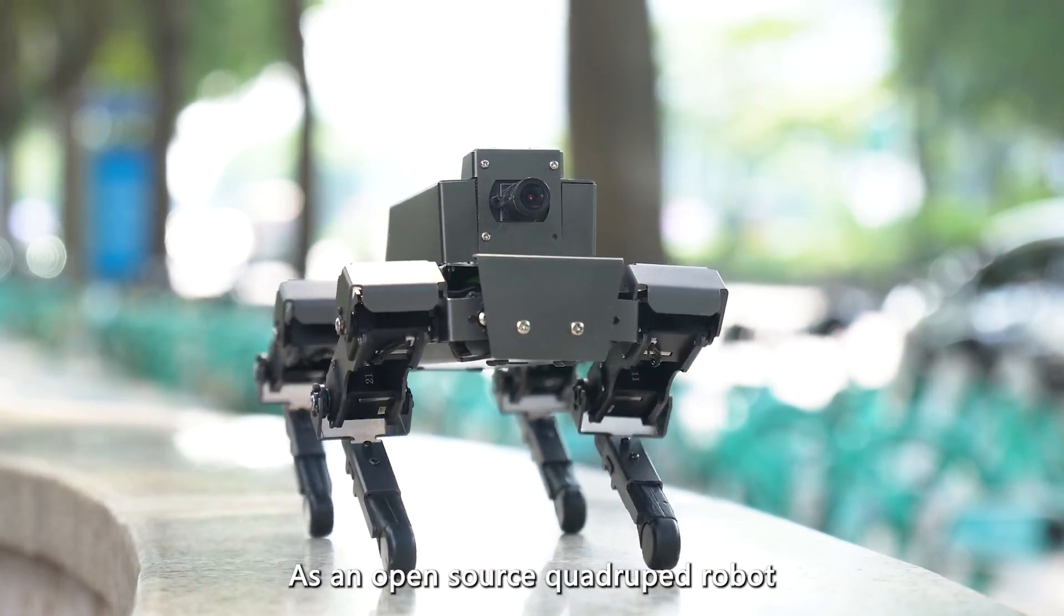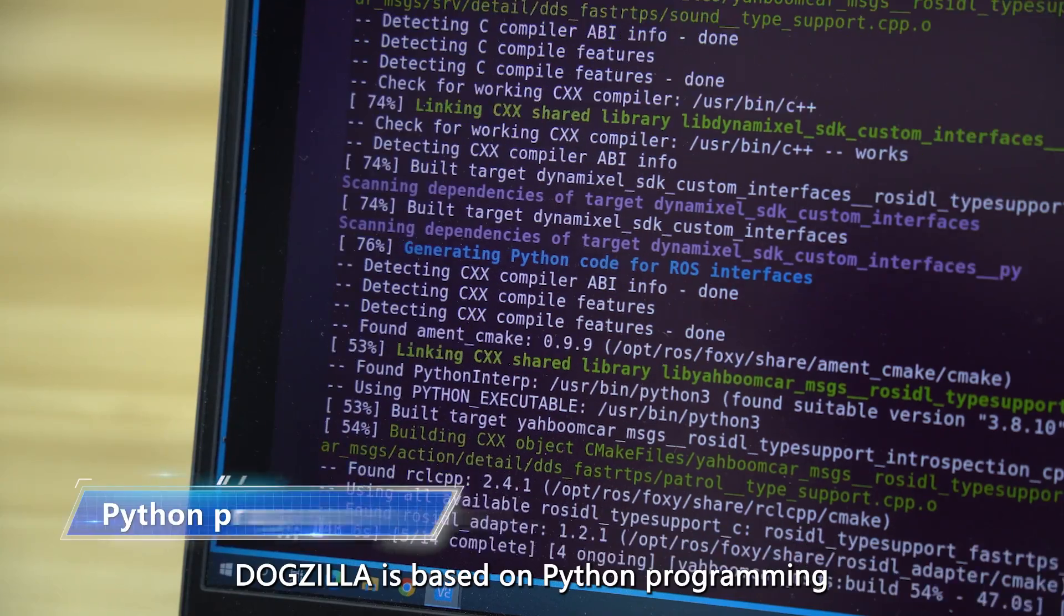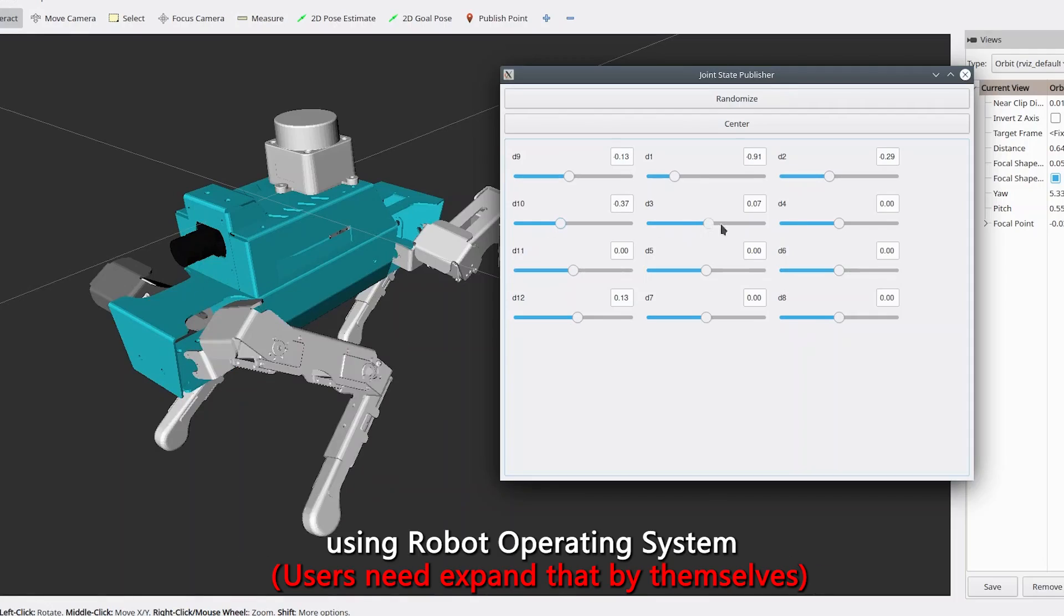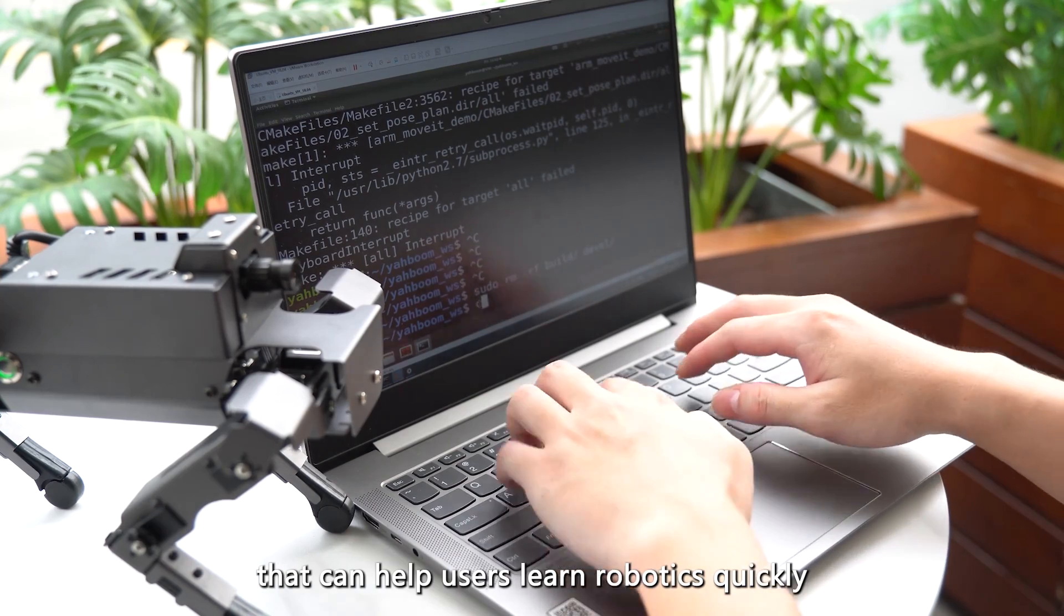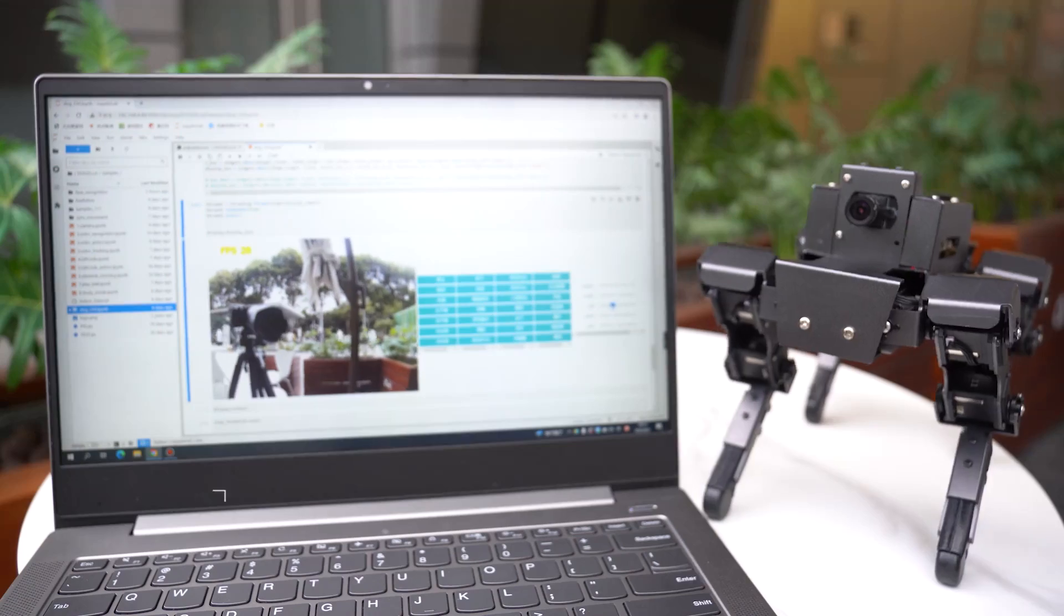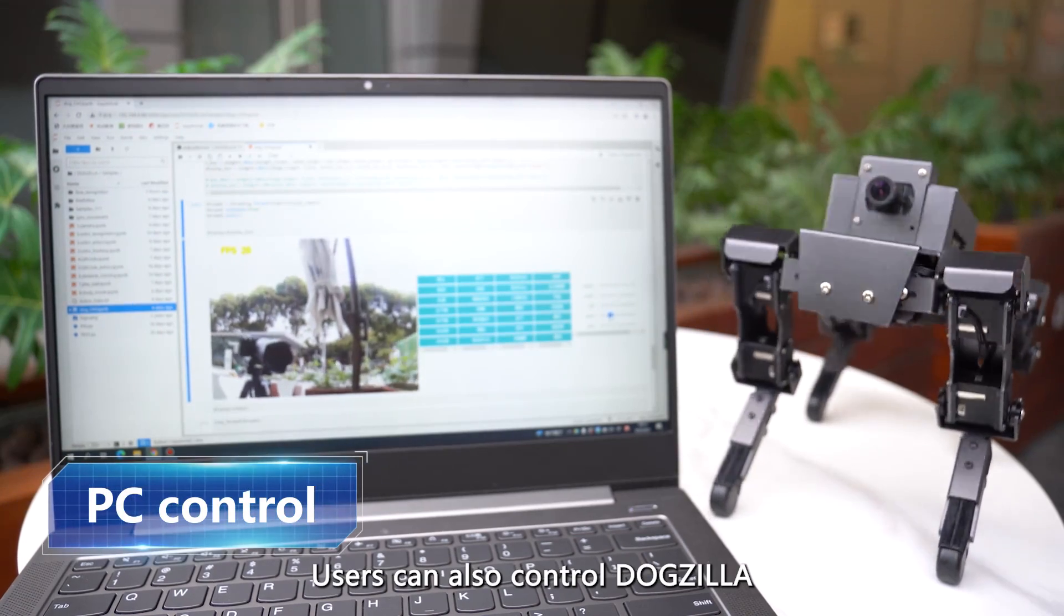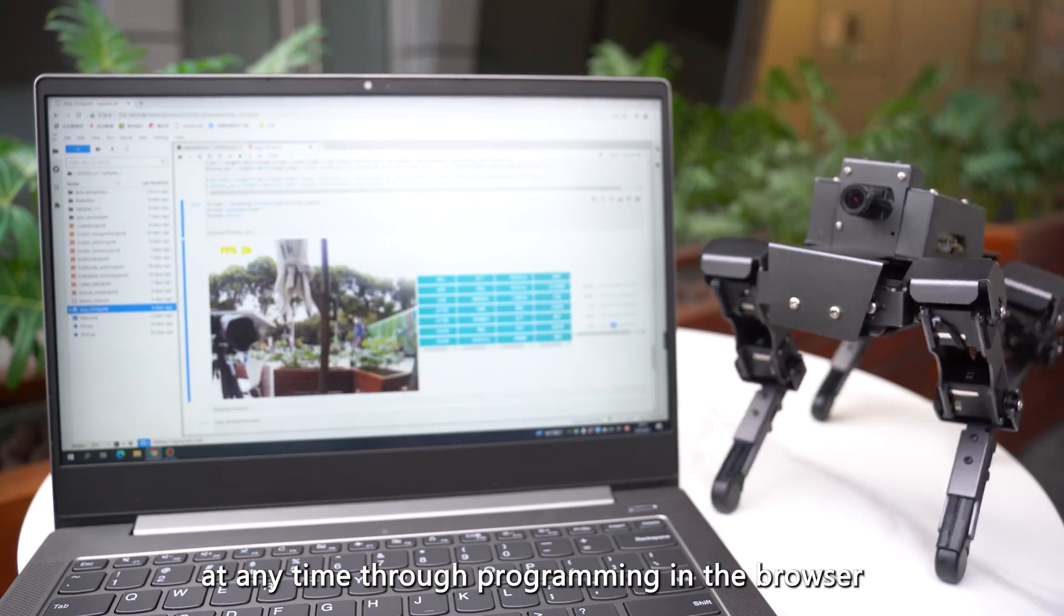As an open-source quadruped robot, Dogzilla is based on Python programming. Using Robot Operating System and supporting developer mode, it can help users learn robotics quickly. Users can also control Dogzilla at any time through programming in the browser.